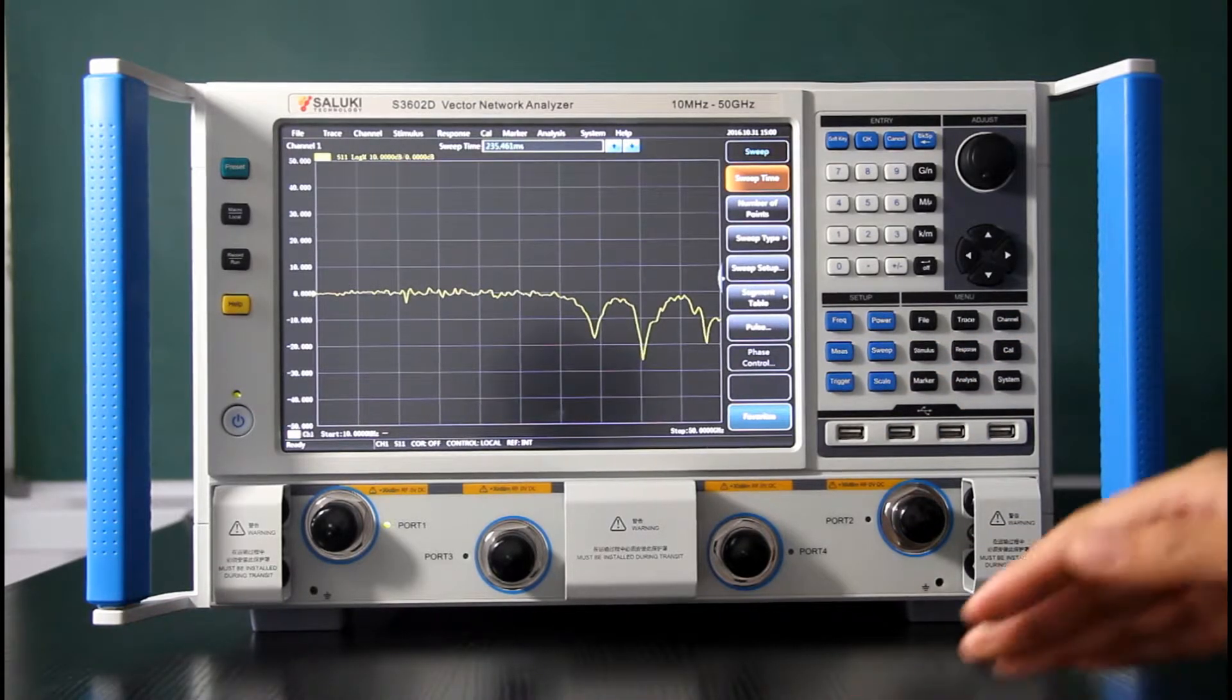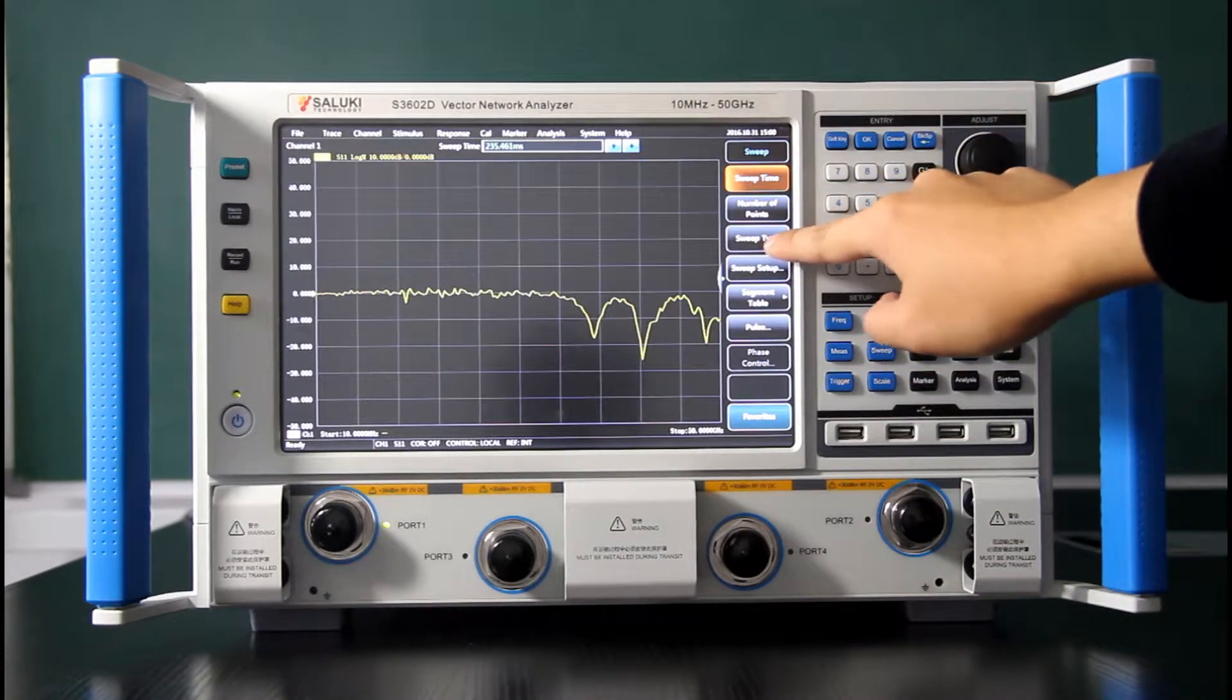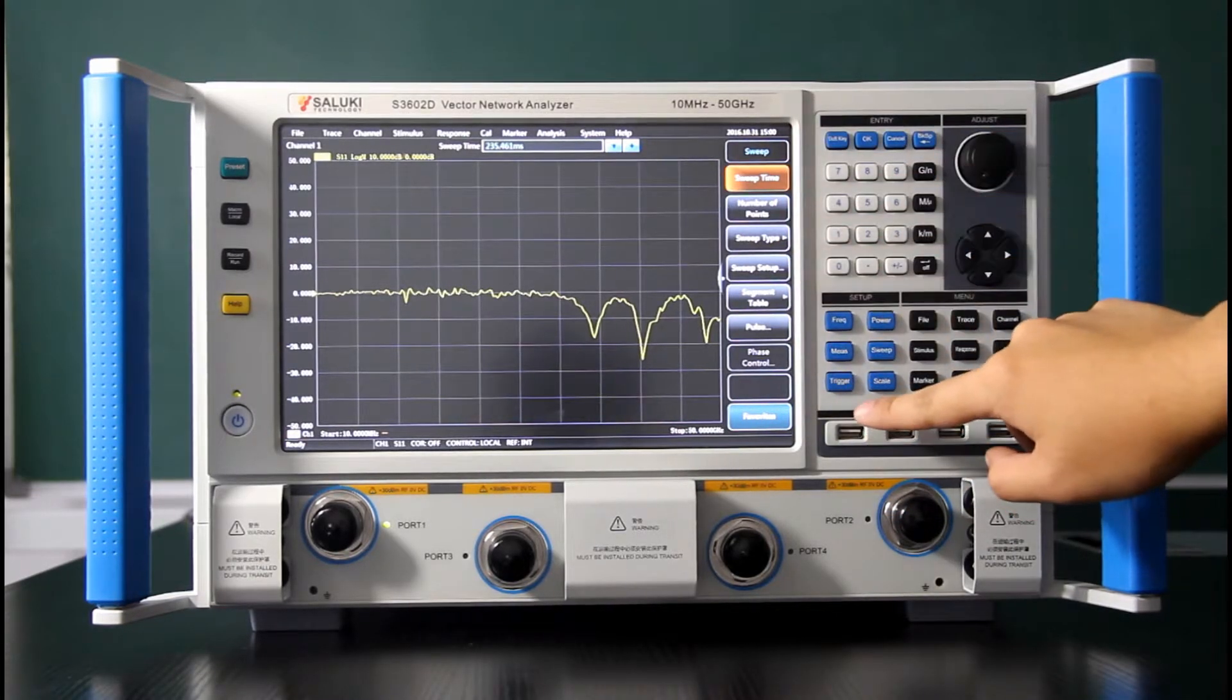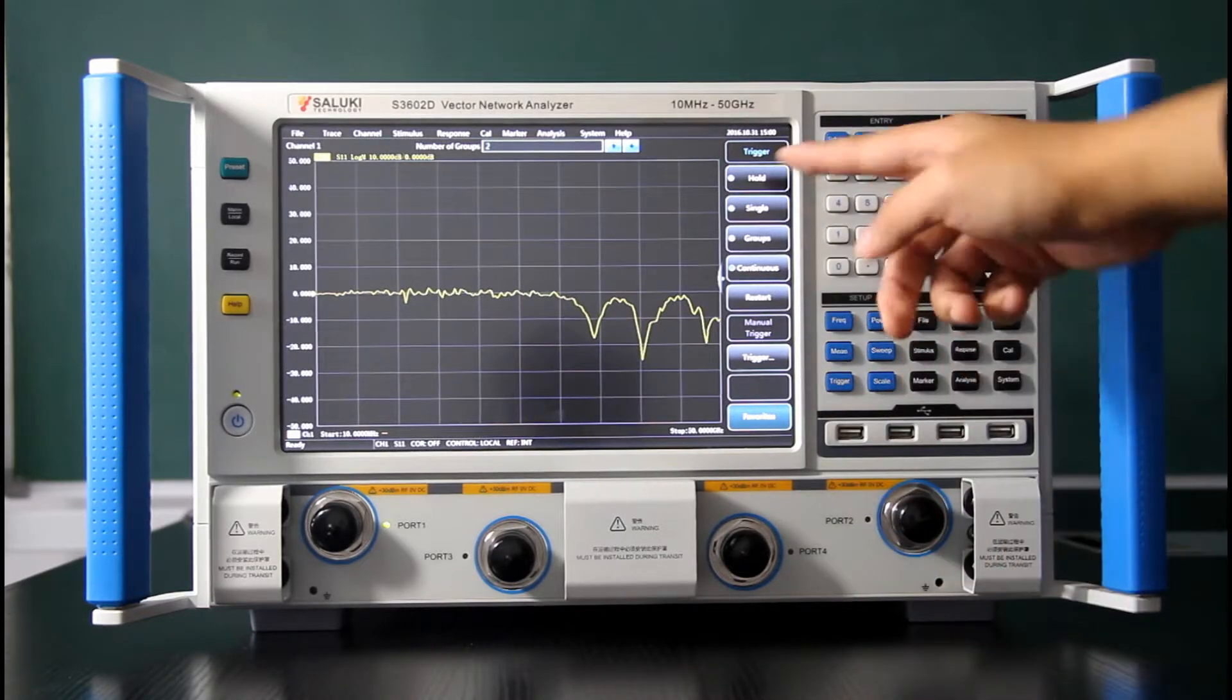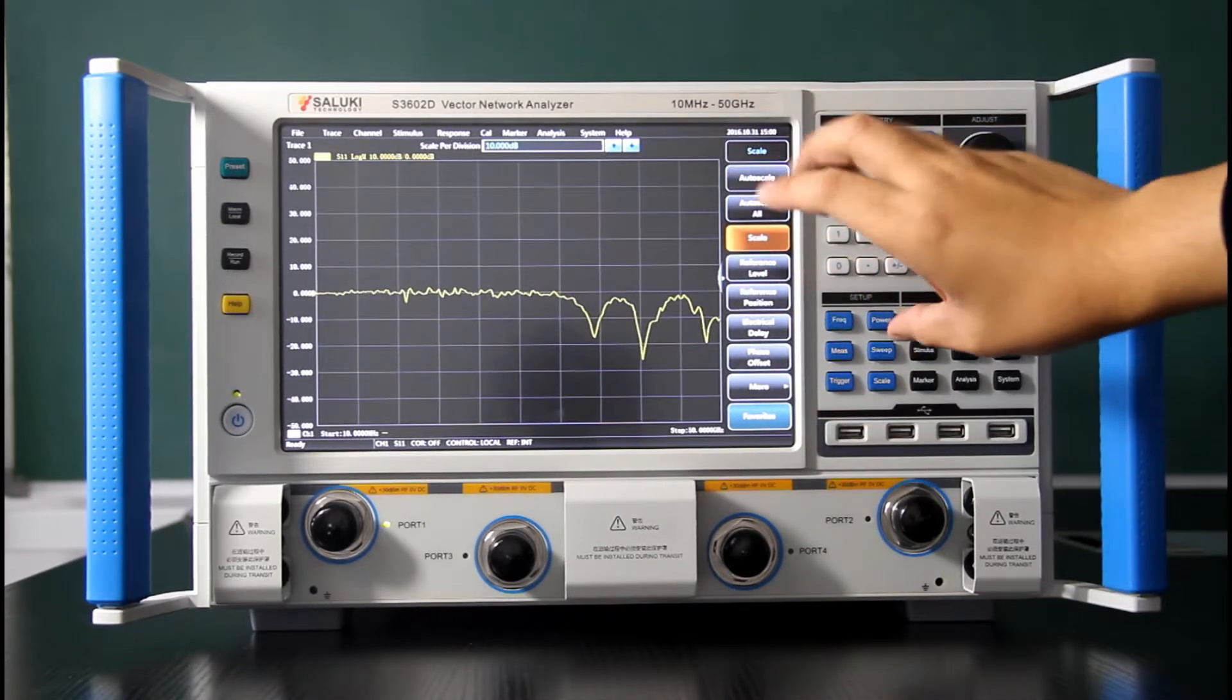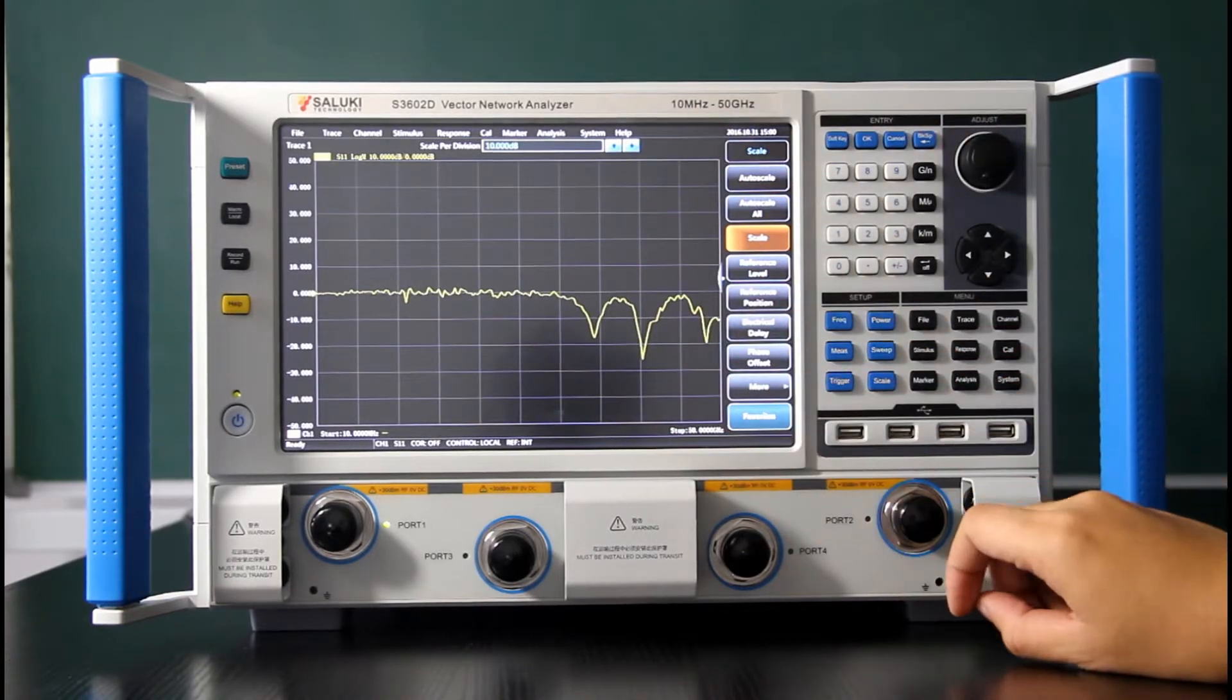Then sweep. Sweep will set up the sweep time and the sweep points. All configurations of our sweep are done here. And the next one, the trigger. Hold single group in continuous is quite obvious. The scale will adjust the display of the traces.